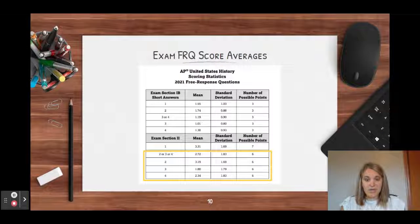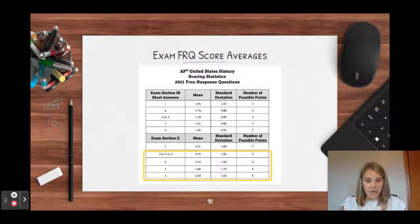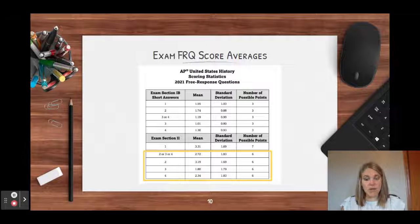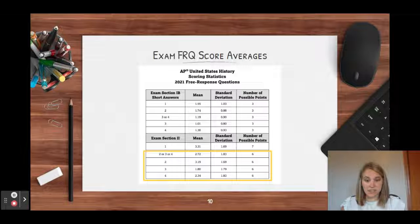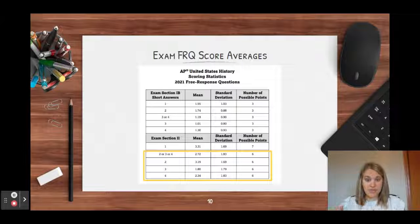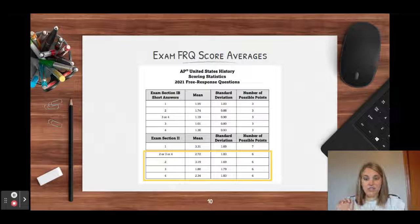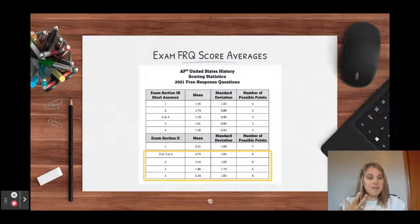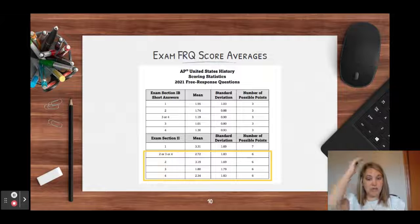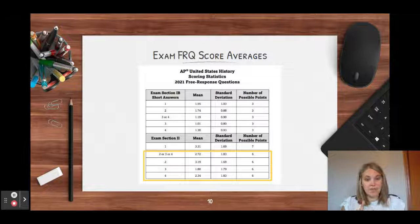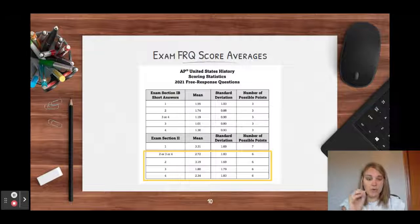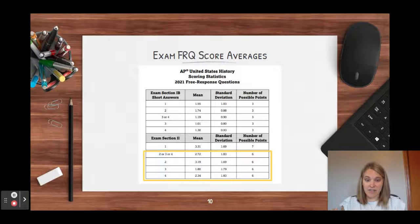Typically on the LEQ, this is from the 2021 free response questions, the average score out of six points in 2021 was 2.72. On question two, that was 3.2, on question three it was 1.8, and question four was 2.3. So it definitely varies based on question and how challenging of a topic it is. But just so you know, if you are hitting three out of six points, you are typically going to be doing a little bit above the global average on the LEQ.